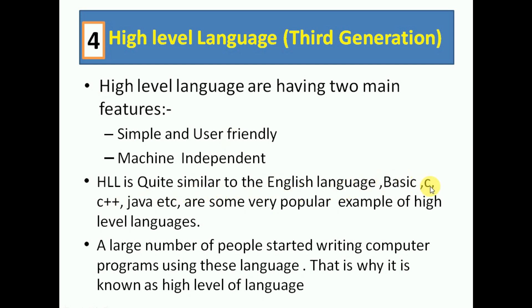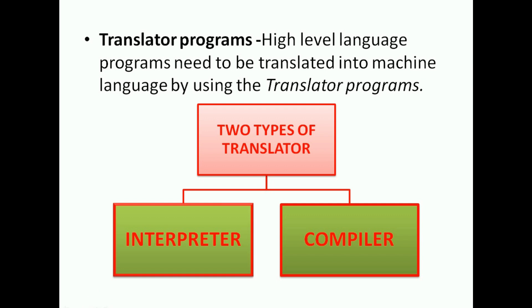High level language is quite similar to the English language. Examples include BASIC, C, C++, Java, and others. A large number of people started writing computer programs using these languages, which is why they are called high level languages.